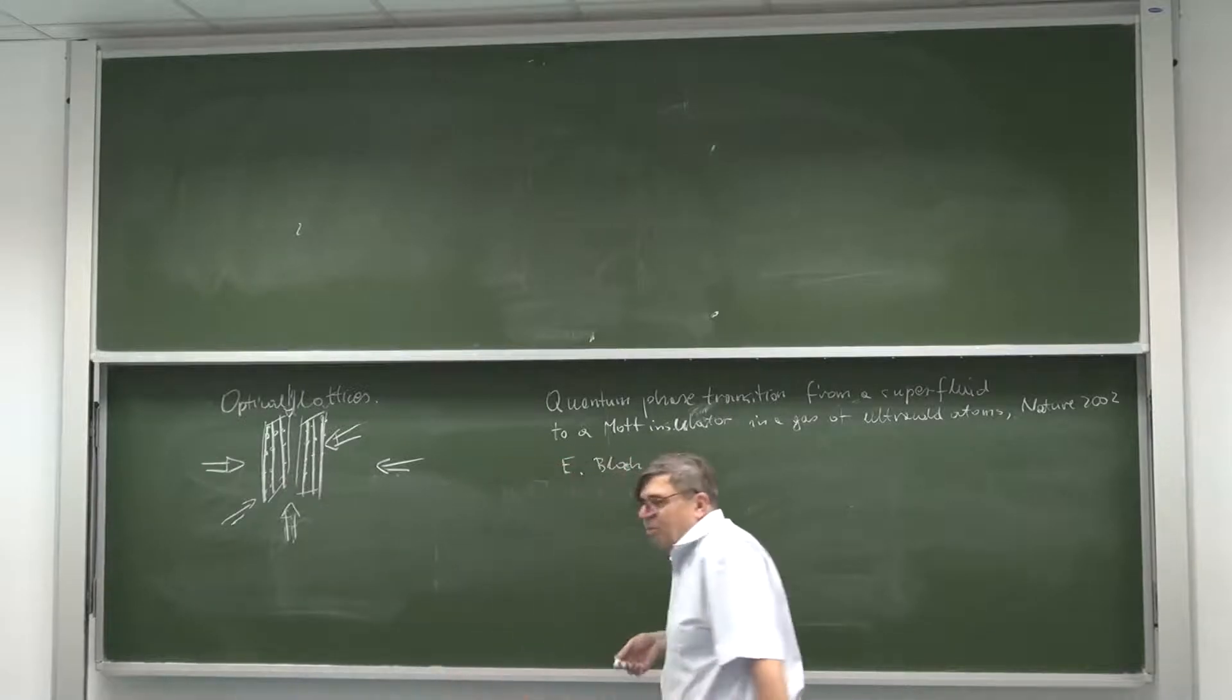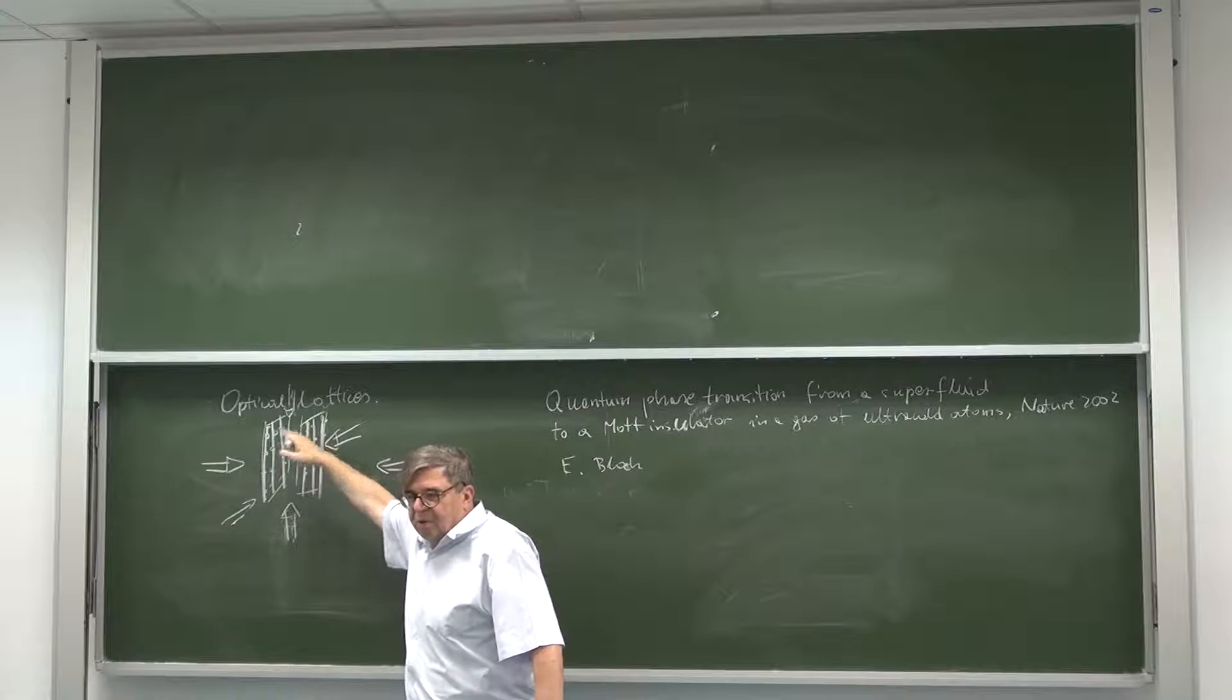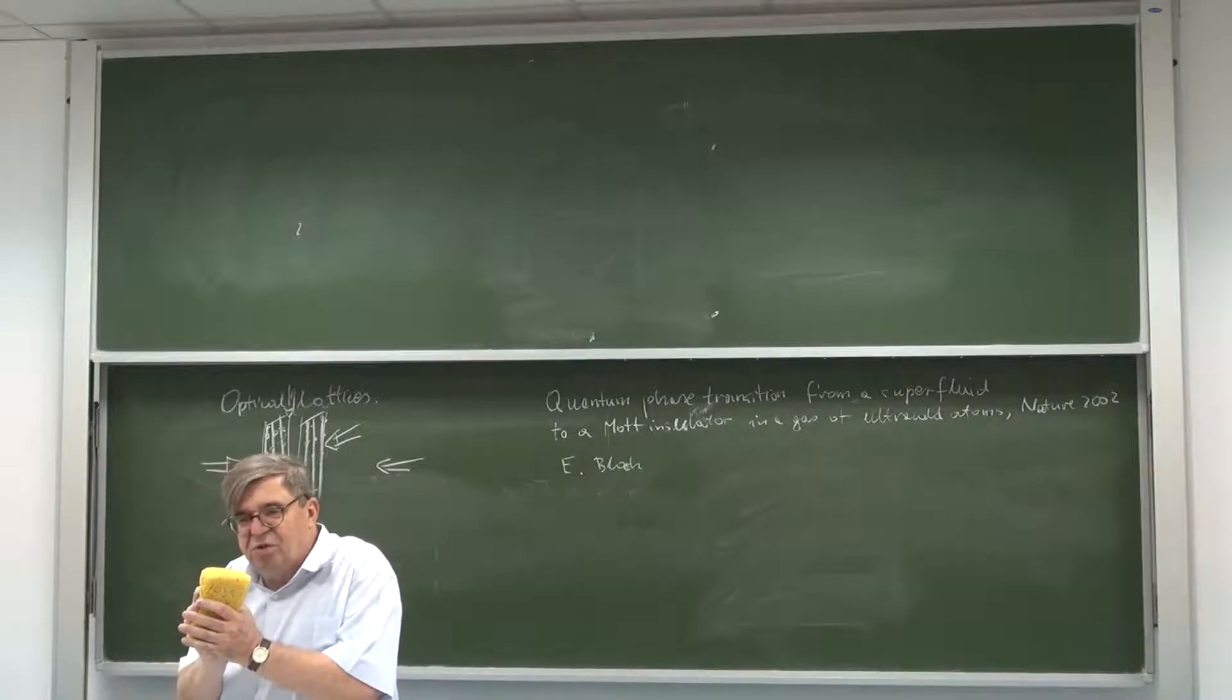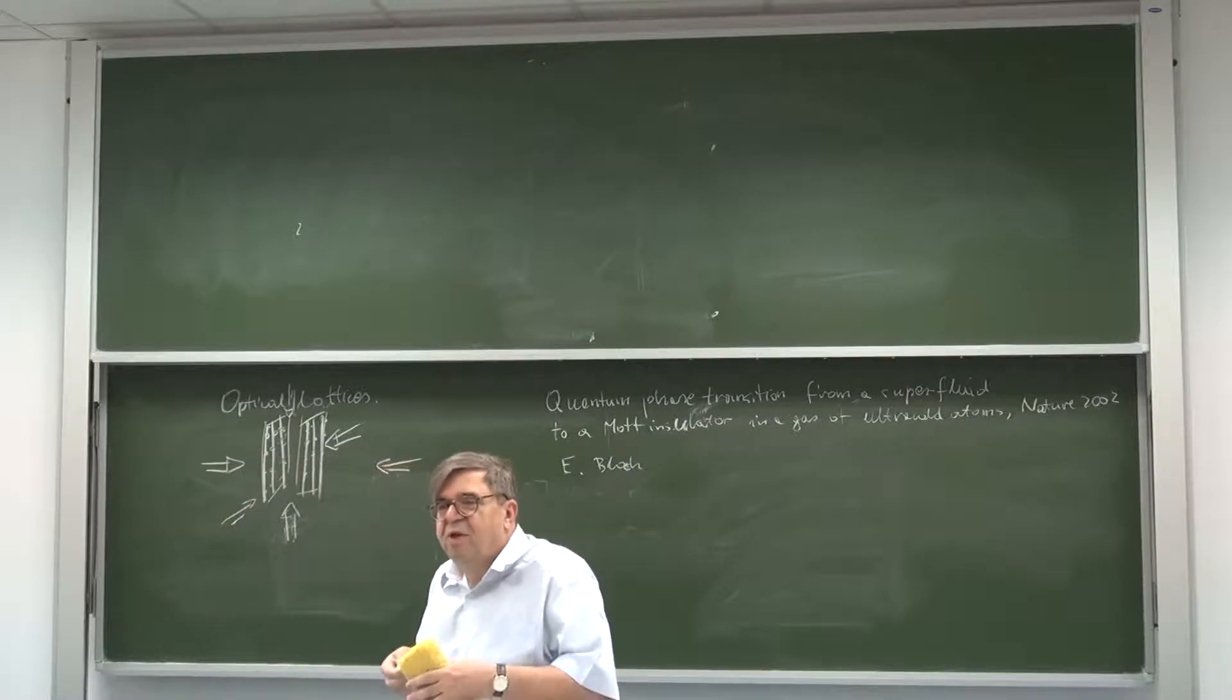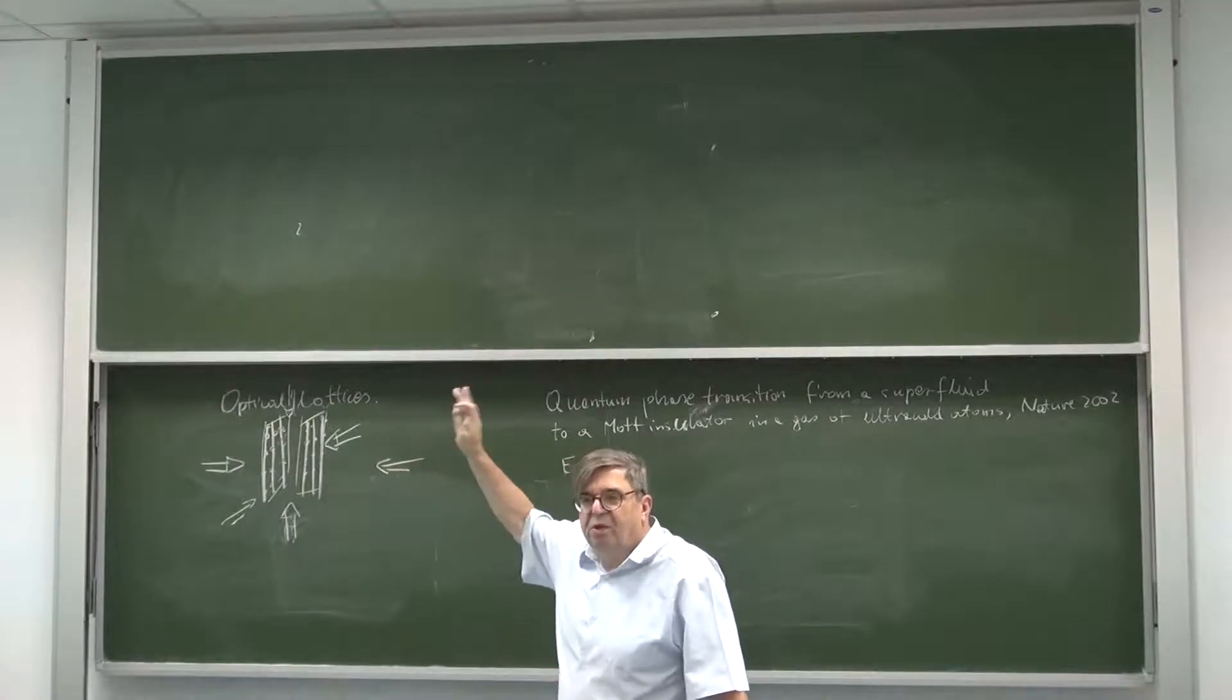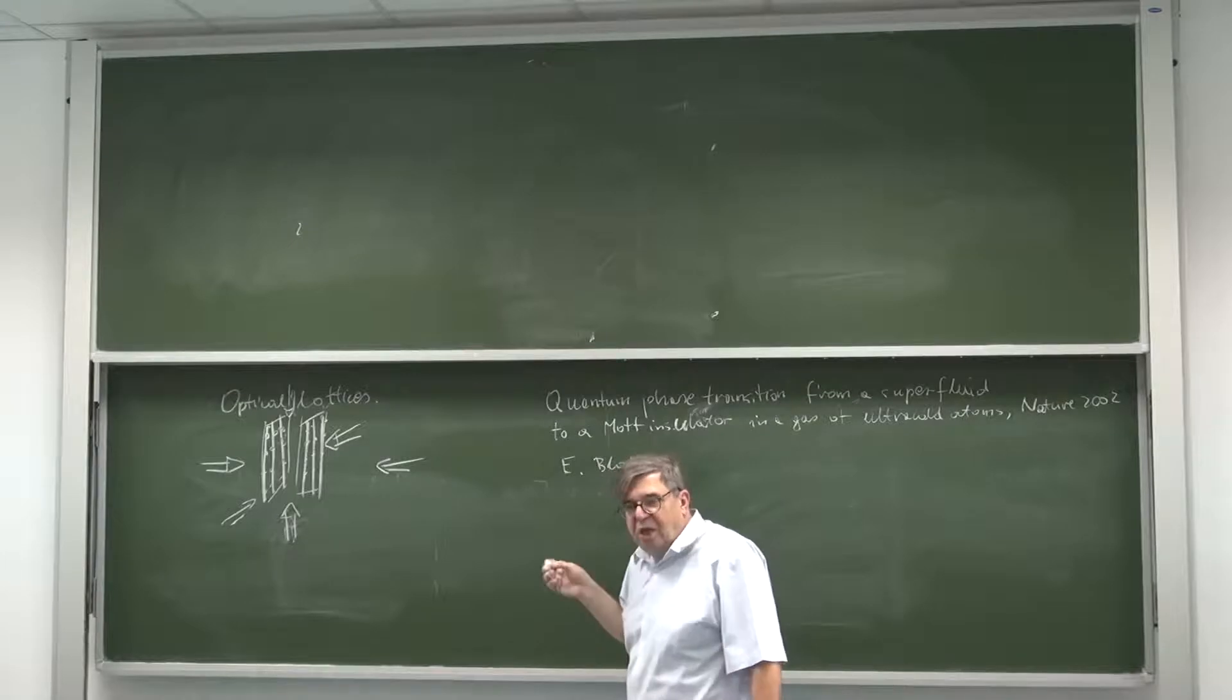But for such a periodic system, the standard description is first to find the eigenstates, or to solve the single particle problem. In the single particle problem you find the natural one-particle basis, and you know that these are Bloch states. You have the periodic system, you have Bloch states. Then the tight binding approximation, when you assume that atoms are localized in these small traps, I would call them lattice sites, and then you can form superpositions and start Bloch waves which is localized in an individual site, which is called the Wannier function.